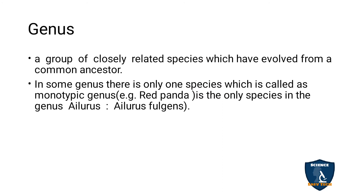Genus is a group of closely related species evolved from a common ancestor — much like fruits coming from the same tree. A monotypic genus has one genus with one species. For example, the Red Panda — genus Ailurus, species Ailurus fulgens.